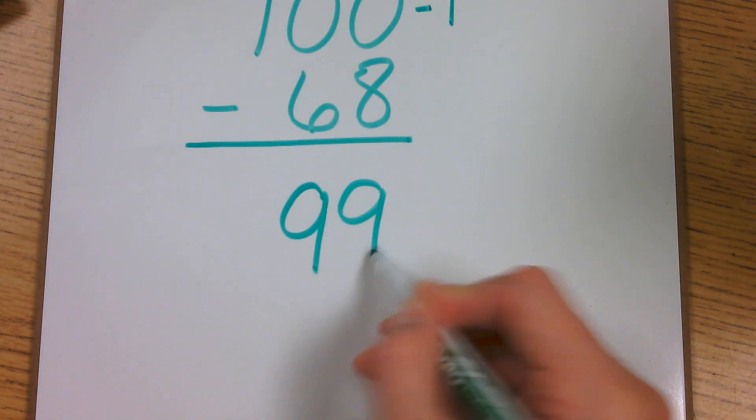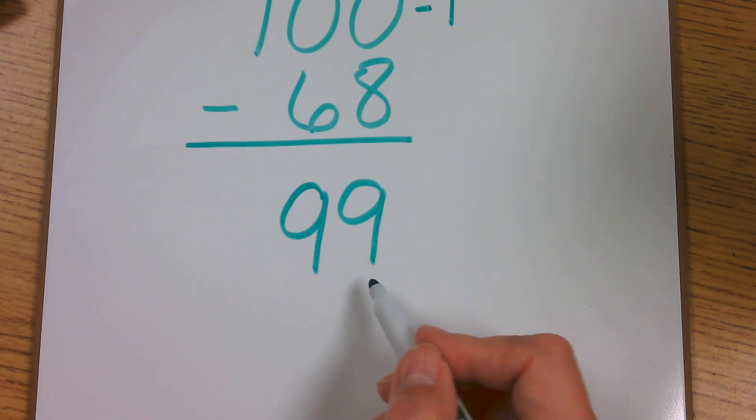And then I'm going to rewrite that problem using 99. So I'm going to write 99 minus 68.